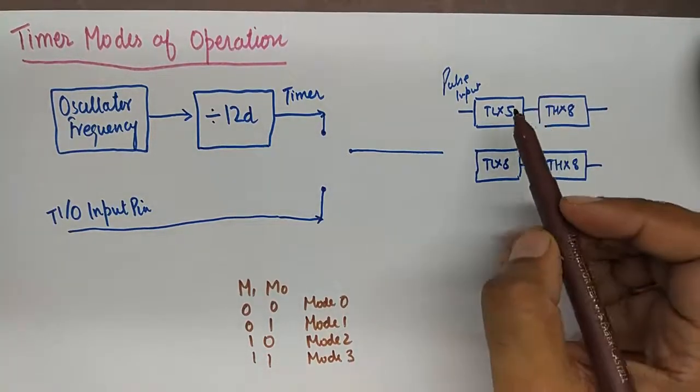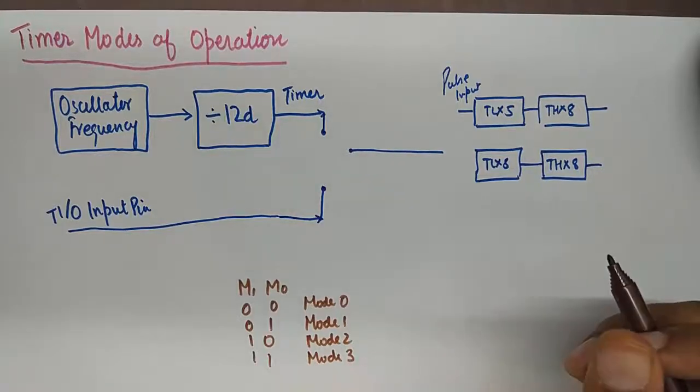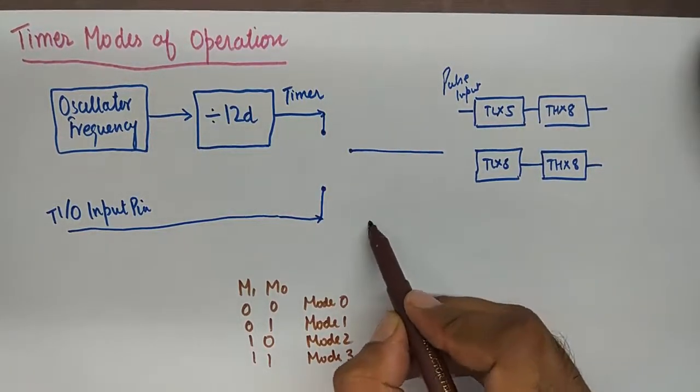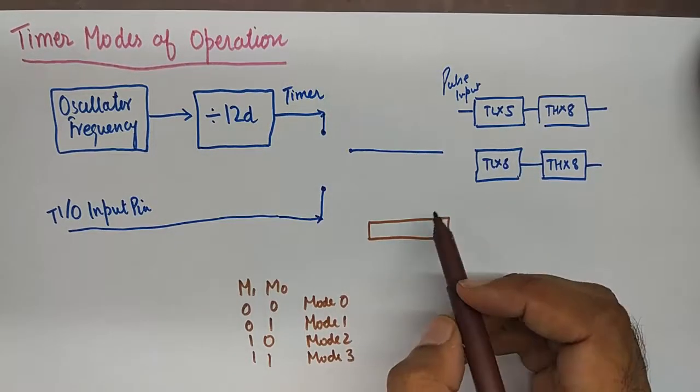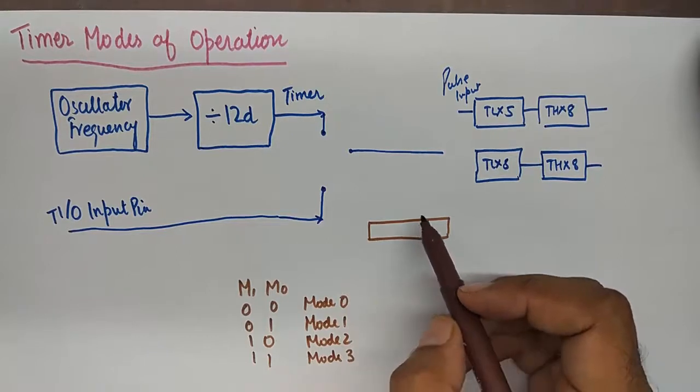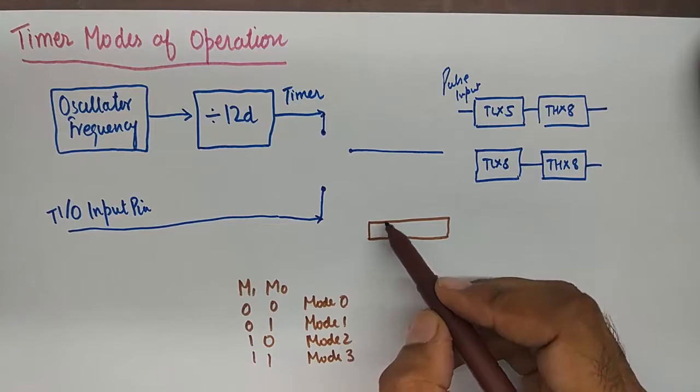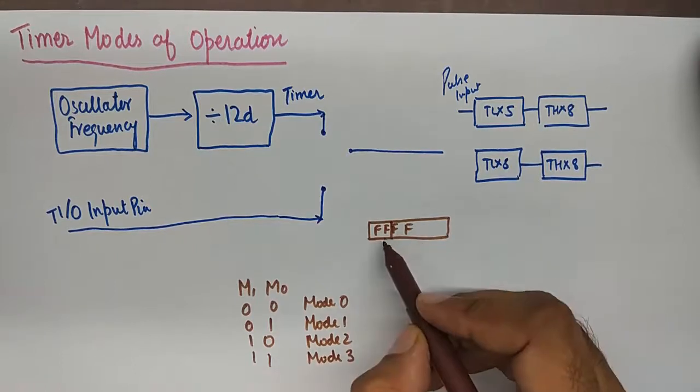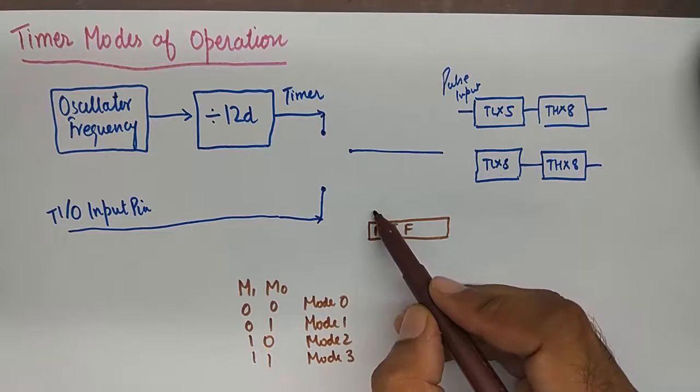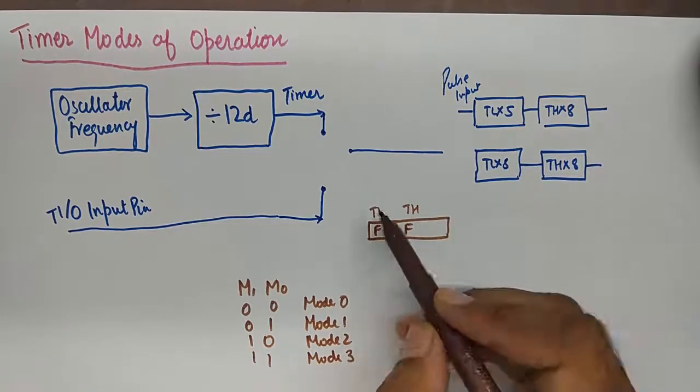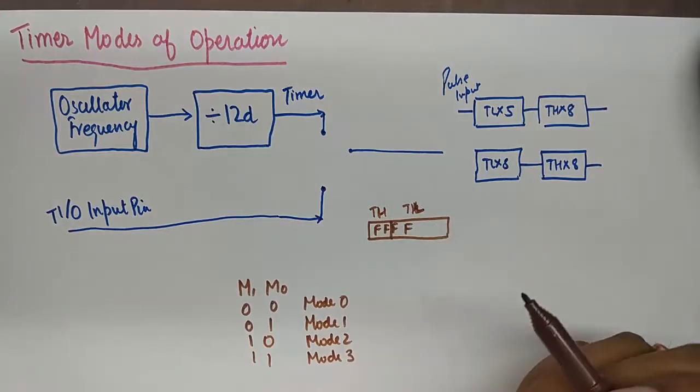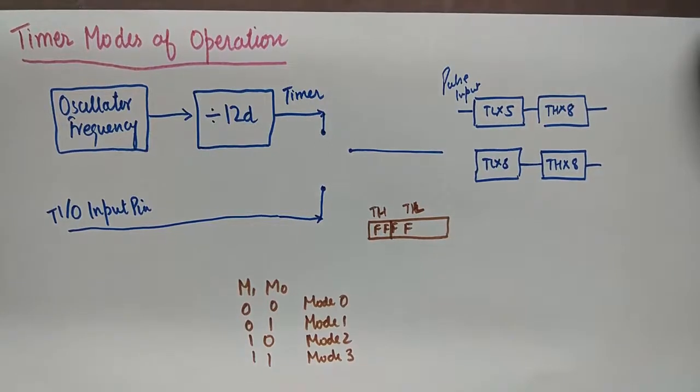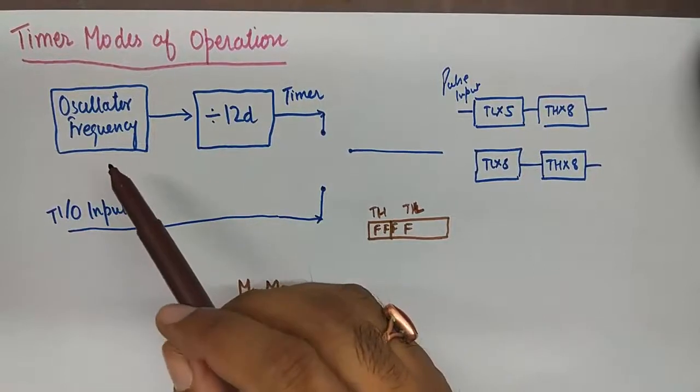Now the operation of timer is pretty simple, which is explained in the previous tutorial. Whatever value we stored in the timer register bits, in the form of bits, that will be incremented and will eventually reach FFF if we consider both the timer registers TL and TH. But how do we increment the bits? What thing determines the increment time? That is represented here in this block diagram.